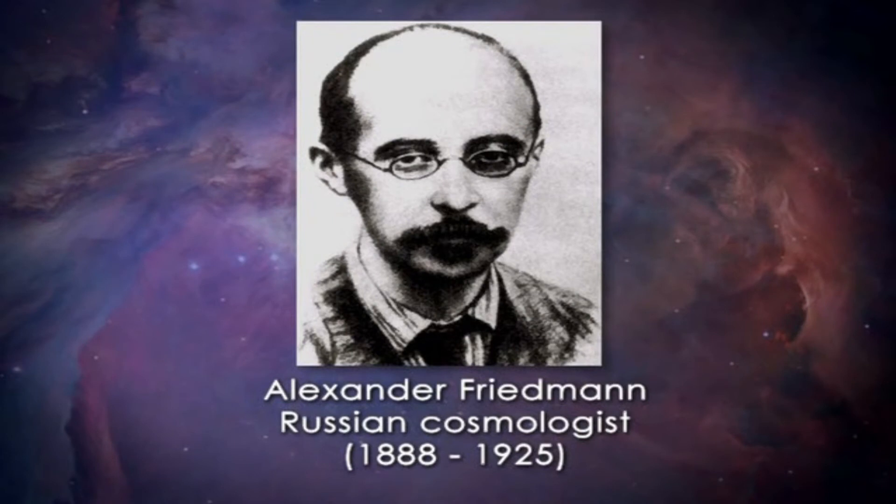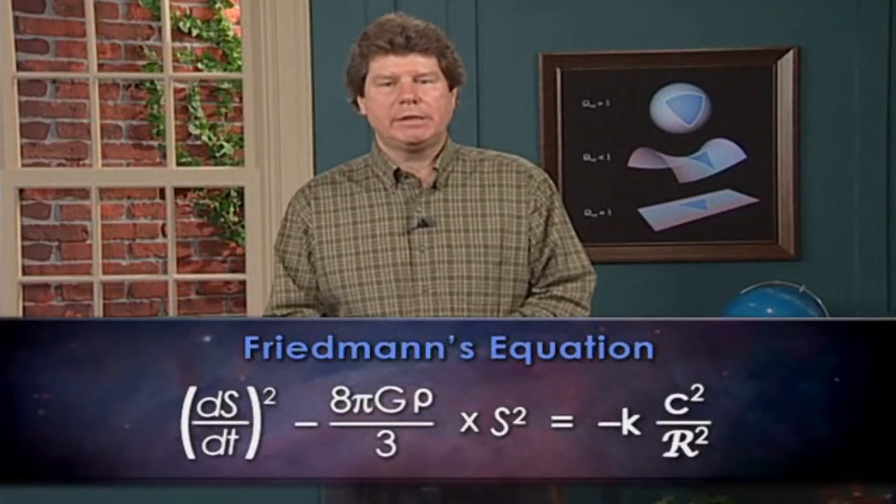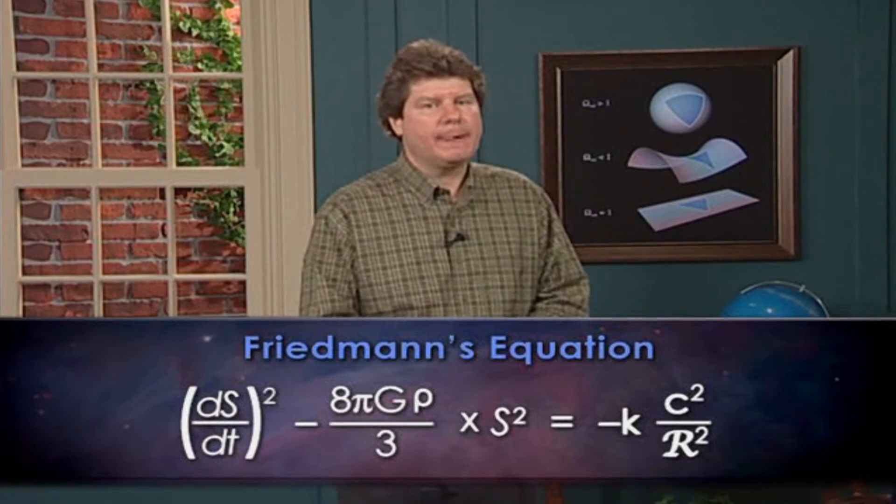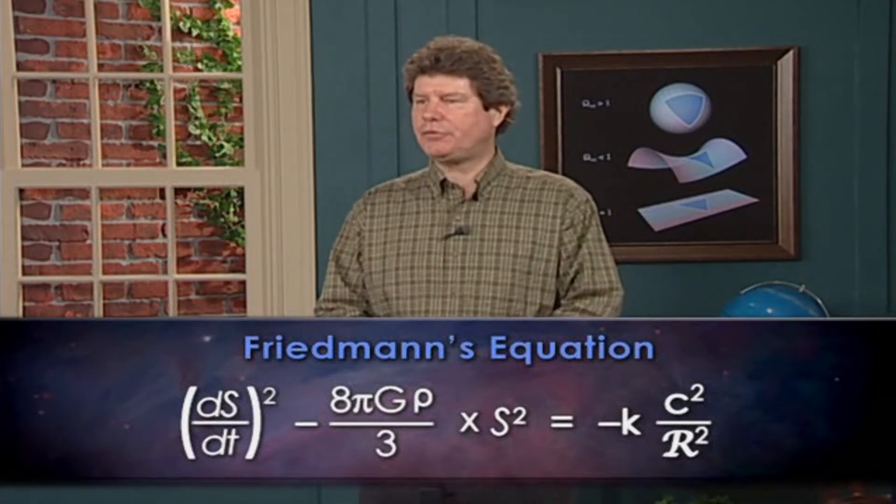The first person to find the solution to Einstein's field equations for a homogeneous universe was the Russian cosmologist Alexander Friedman in 1922, and so we now refer to the Friedman equation. Here it is. We don't need to look at it in detail, but notice it has a familiar form.